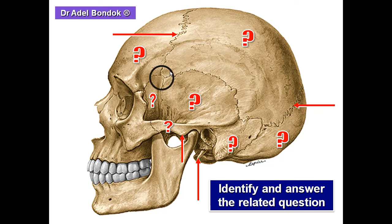This H-shaped area is the pterion. The clinical importance of the pterion is that it overlies the frontal branch of the middle meningeal artery; therefore, fracture of the pterion may injure the middle meningeal artery, causing epidural hemorrhage.